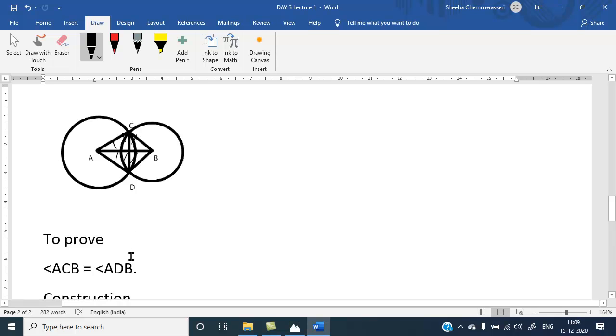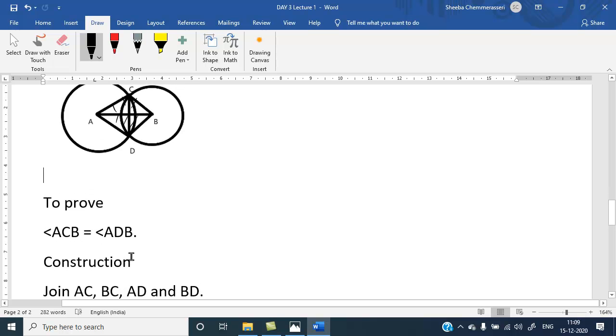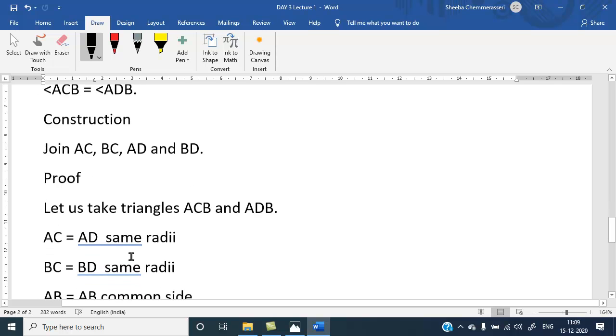We have to prove angle ACB equal angle ADB. That is what we have to prove. So, for construction part, join AC, join AD, join BD and join BC. So, proof.